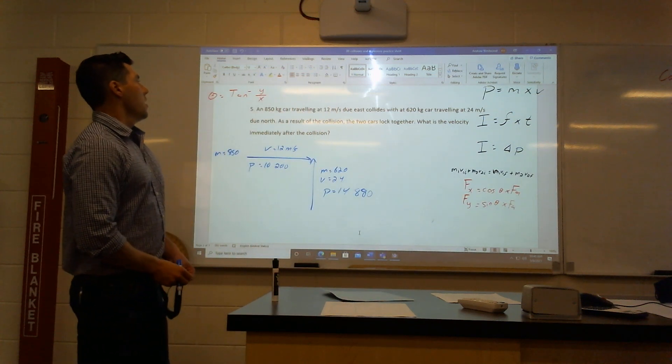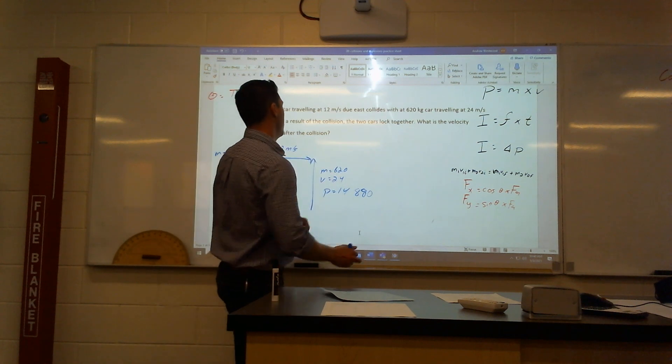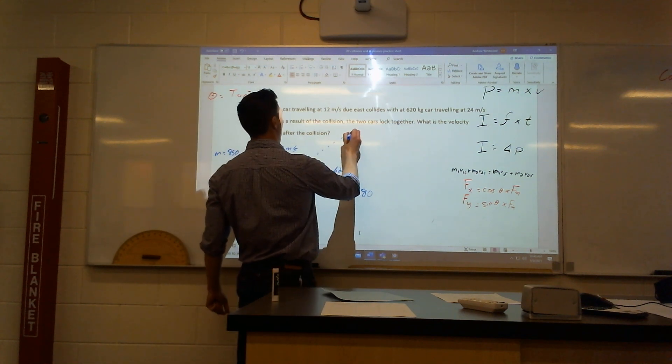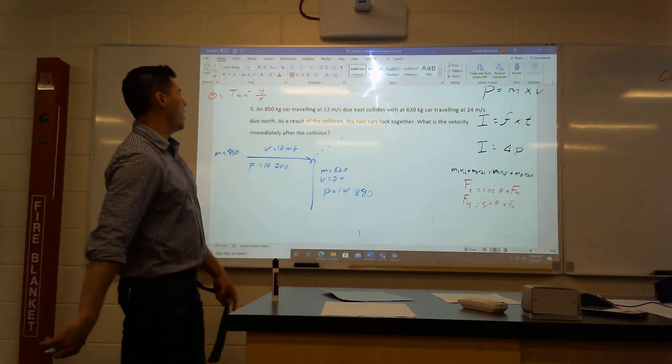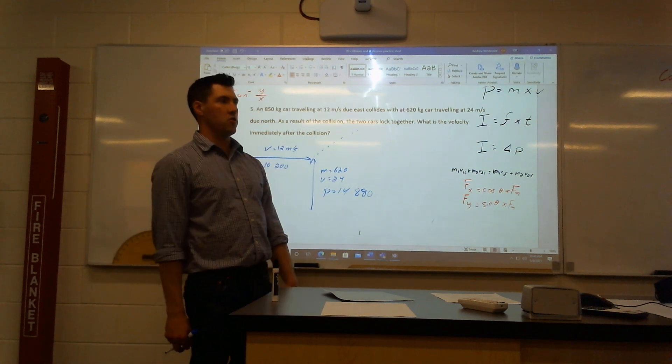As a result of the collision, the two cars lock together. So these cars basically lock and head off in this direction. What is the velocity after collision? Remember, velocity means magnitude and direction, so I need both.